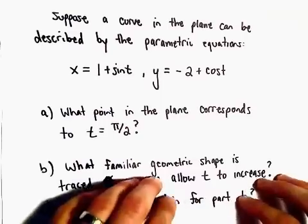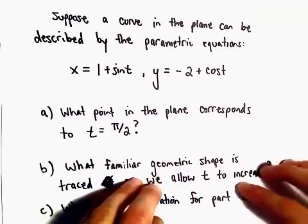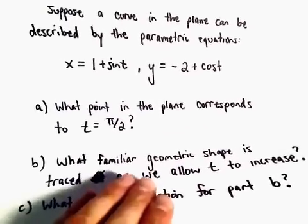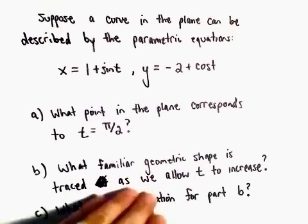x equals 1 plus sine t, y equals negative 2 plus cosine t. We want to know what point in a plane corresponds to the point t equals pi over 2.